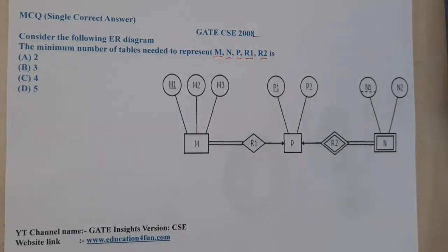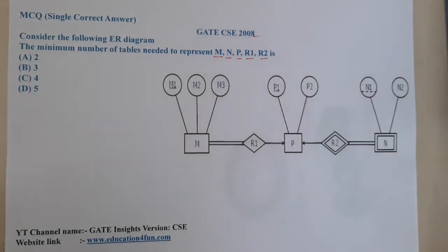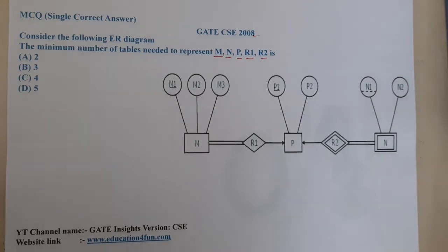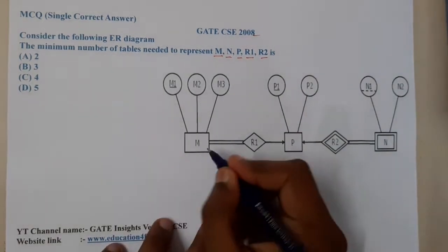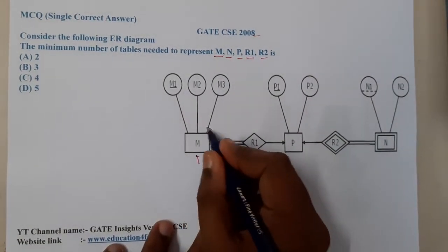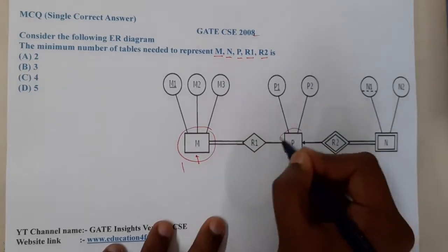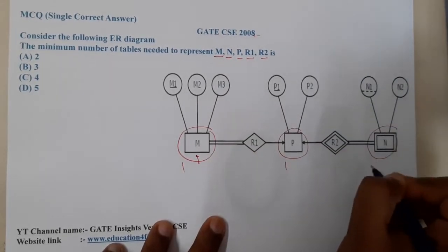So what we can analyze here - in the question did they give any relation between this M and R? The only thing I can observe here is this is a table, so indirectly this will be one table, and this will be one table, and this will be one table. So three is minimum. Option A is wrong.